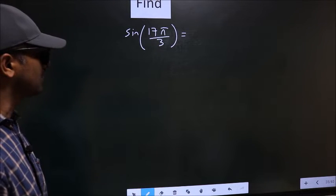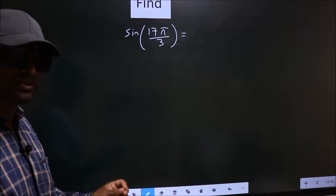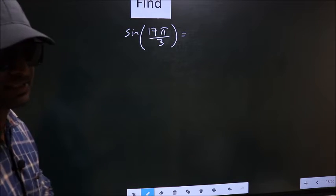Find sin 17 pi by 3. To find this, we should follow this method C.